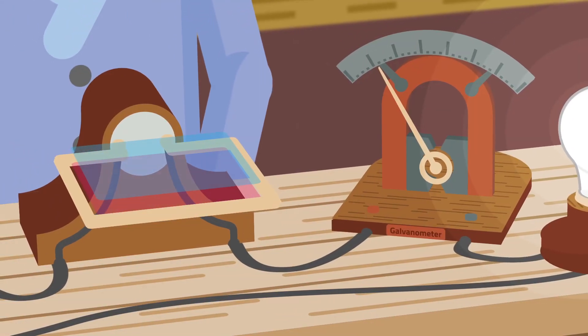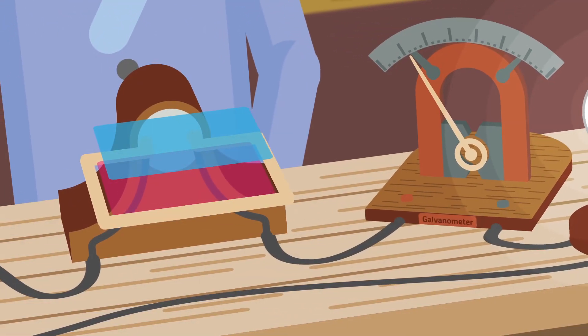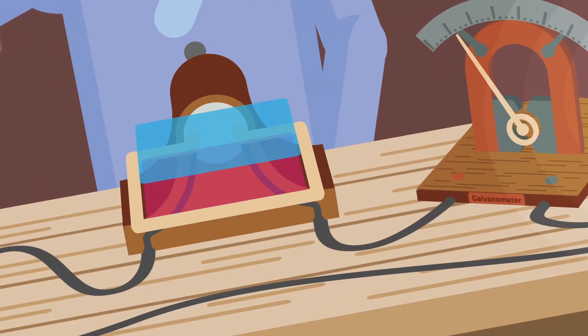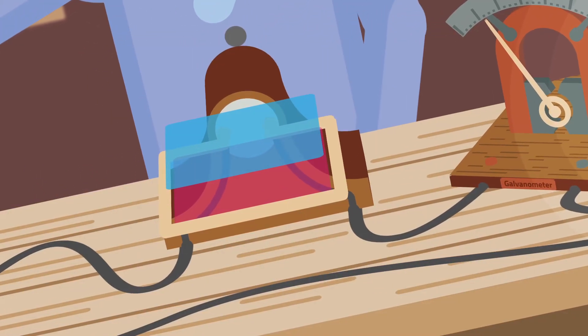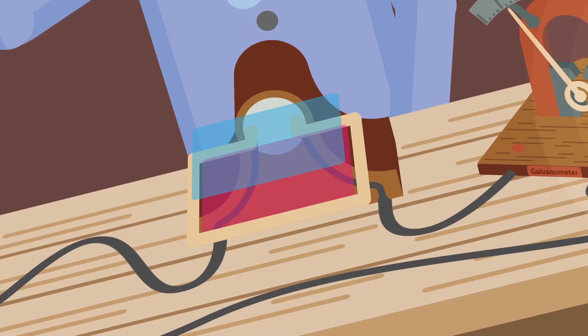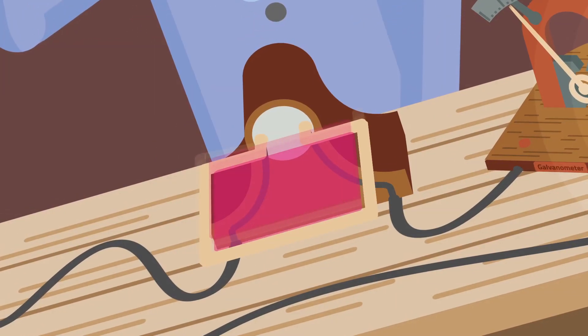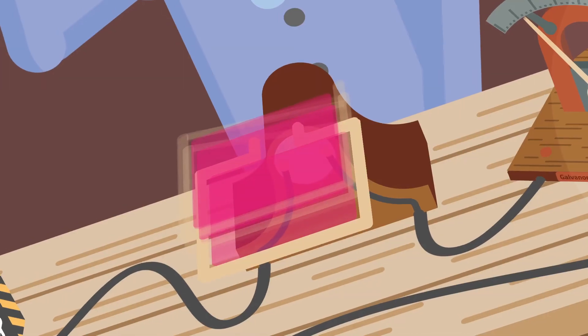This current creates a magnetic field around the winding that opposes the magnetic field of the moving magnet. This phenomenon was first described by Heinrich Lenz and is since called Lenz's law.